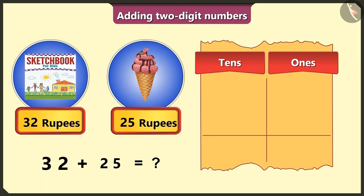Hmm, okay. From thirty-two, we write three in the tens box and two in the ones box.